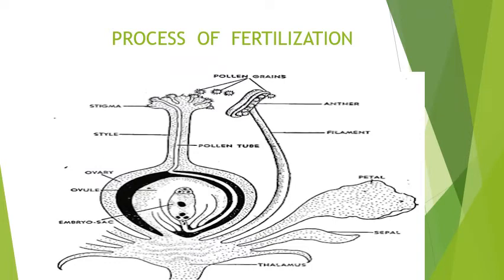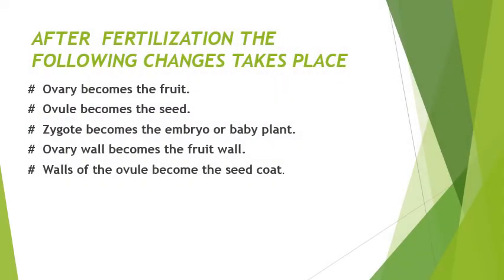In this slide, the same process is shown again: pollen grains reach the stigma, germinate, produce a pollen tube carrying the male cell, run through the style, and reach the ovary. Inside the ovary, the ovule is present, and the ovule carries the female cell. The pollen tube bursts open inside the ovule; the male cell fuses with the female cell — this fusion is called fertilization — and a zygote is formed.